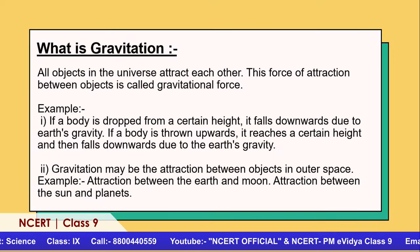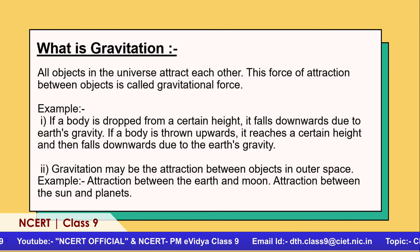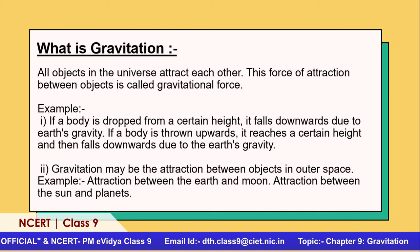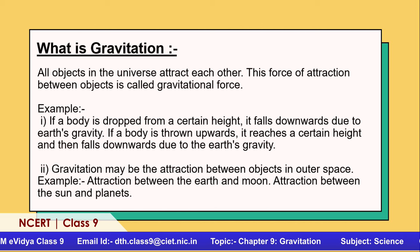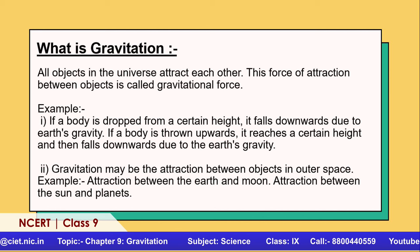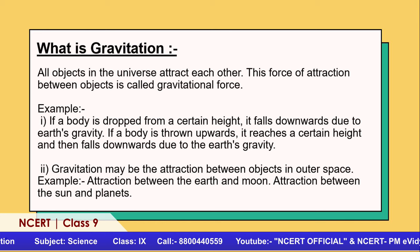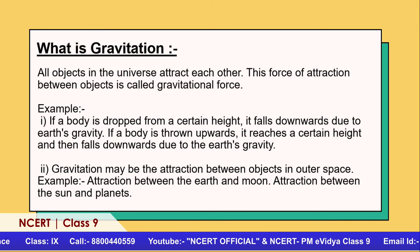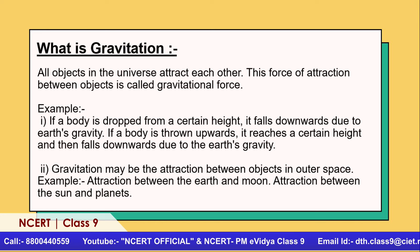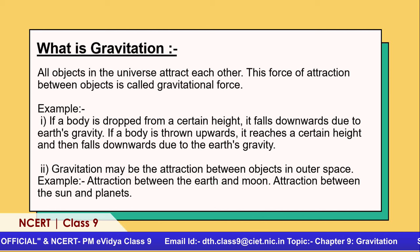All objects in the universe attract every other object, and this force of attraction between objects is called the gravitational force. If a body is dropped from a certain height, it always falls downward — attracted toward the earth — and that is because of Earth's gravity. Gravitation is not only between two bodies; it extends to the universe: the attraction between the sun and planets, the earth and the moon — all these come under gravitation.